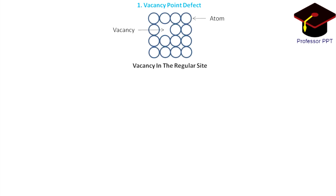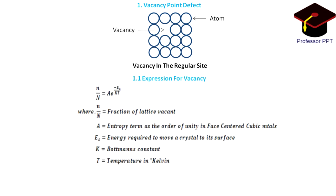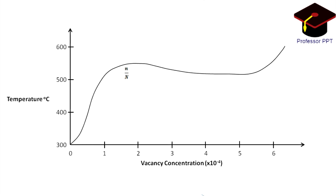If an atom is missing from its regular site, the defect produced is called a vacancy. The equilibrium vacancy concentration at any temperature is given by the following expression. Now, let us consider the vacancy concentration graph. The graph shows that the fraction of vacant lattice sites in a metal increases exponentially with temperature.